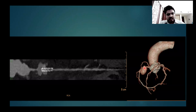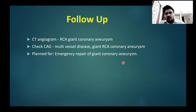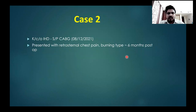A pseudoaneurysm was noted arising from the proximal segment of the RCA just proximal to the stent. On follow-up, check coronary angio showed multivessel disease with a giant RCA coronary aneurysm. The patient was planned for emergency repair of the giant coronary aneurysm.